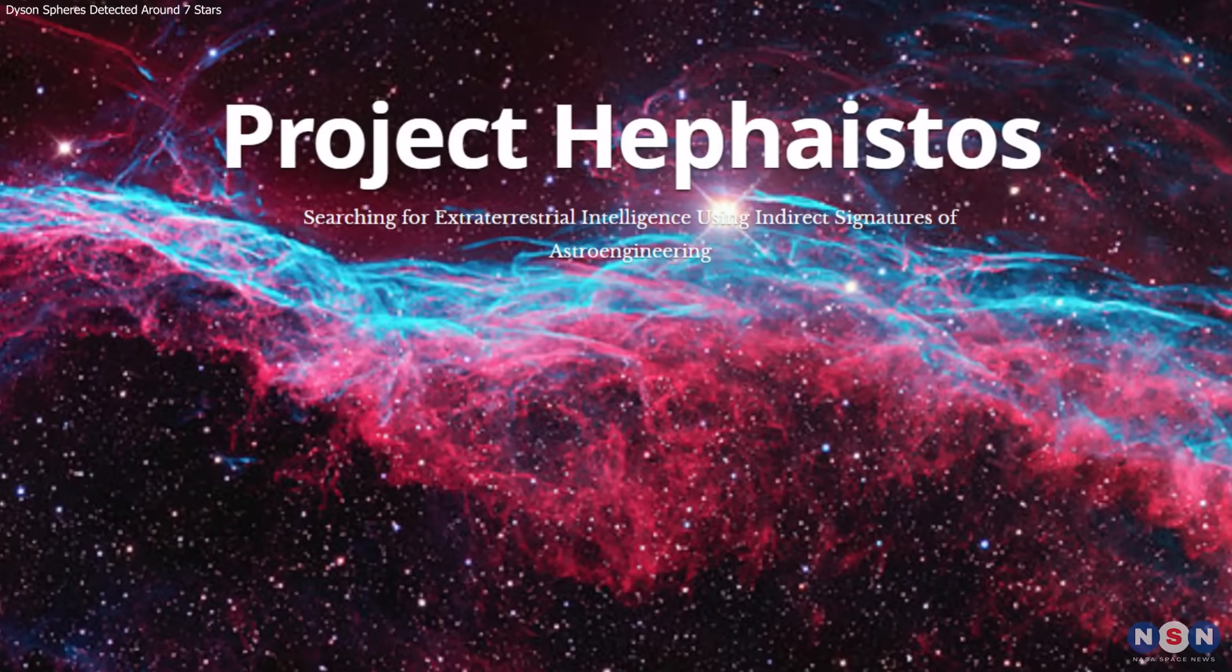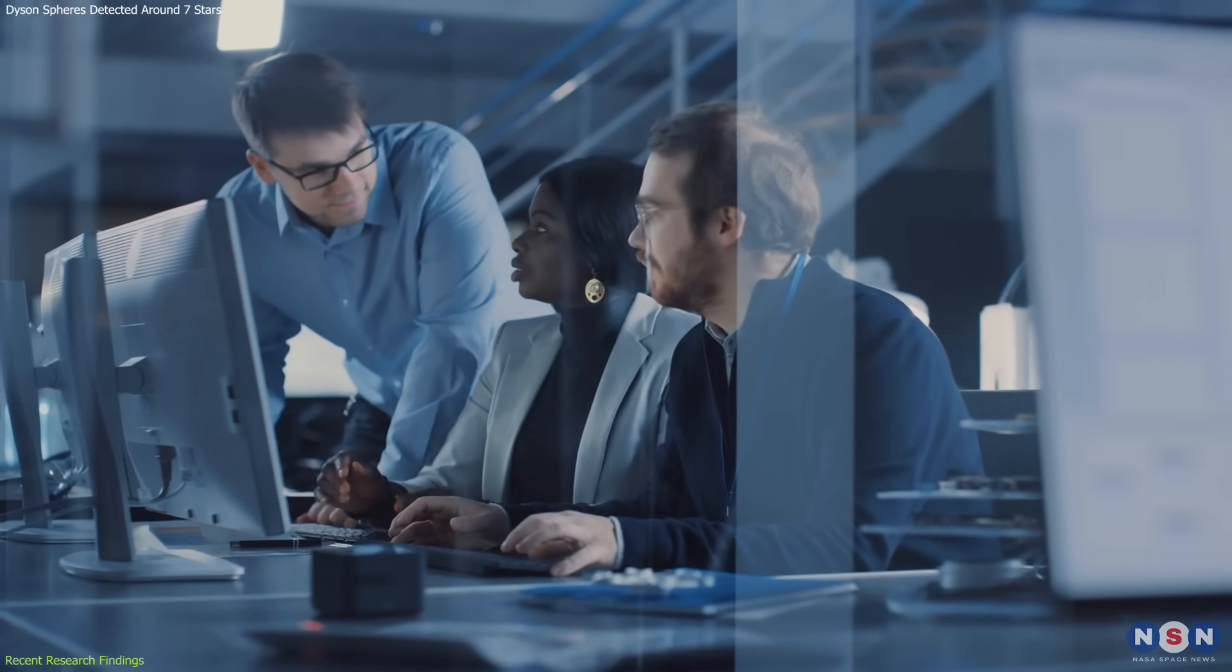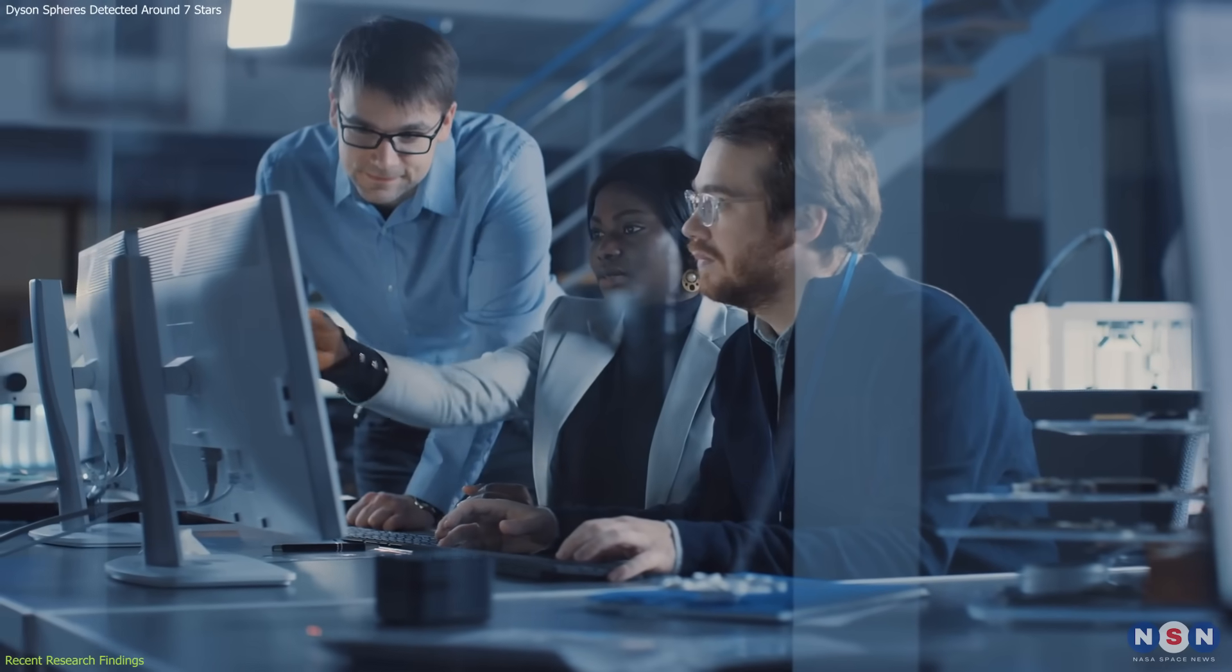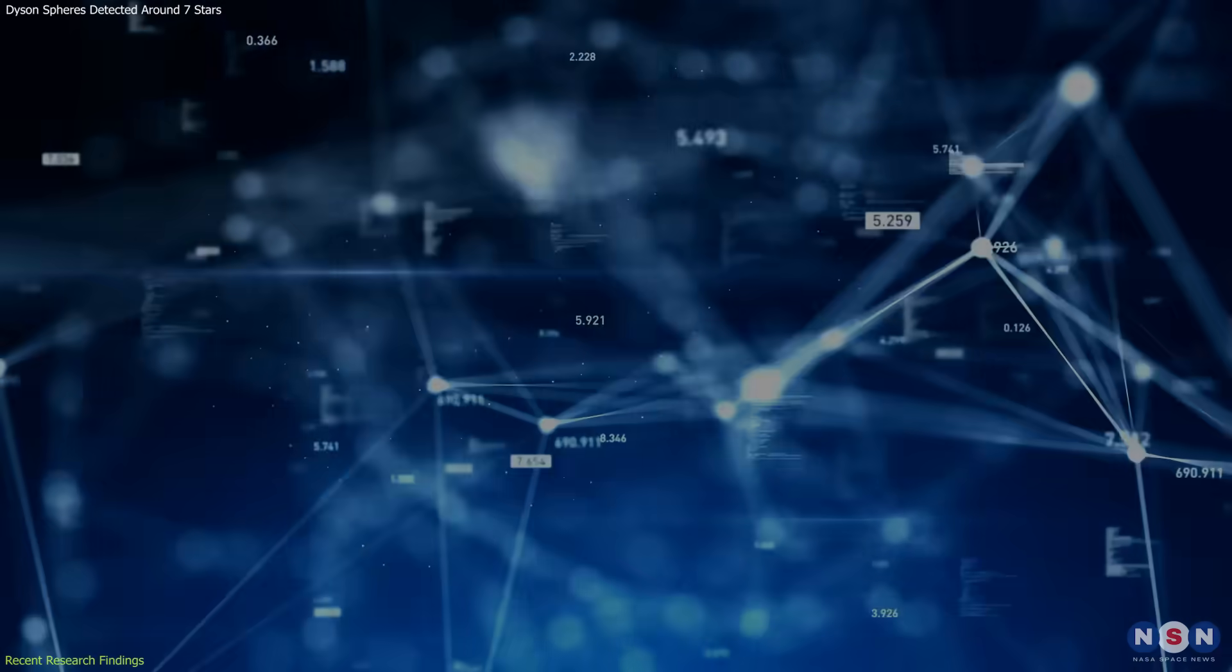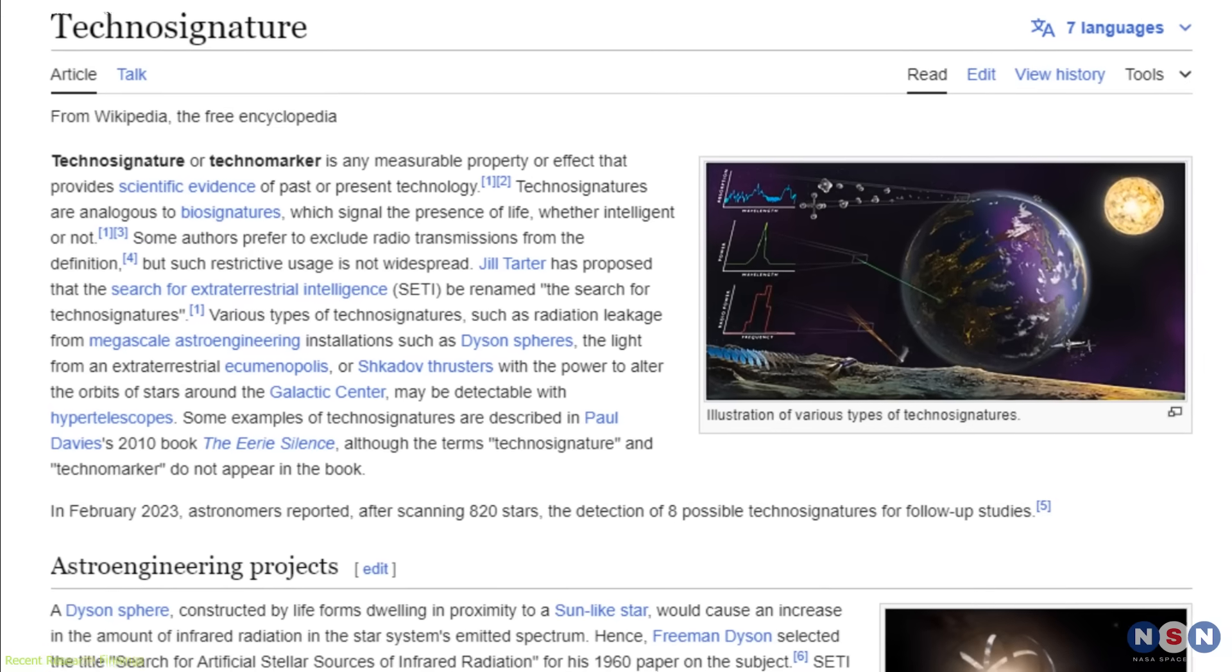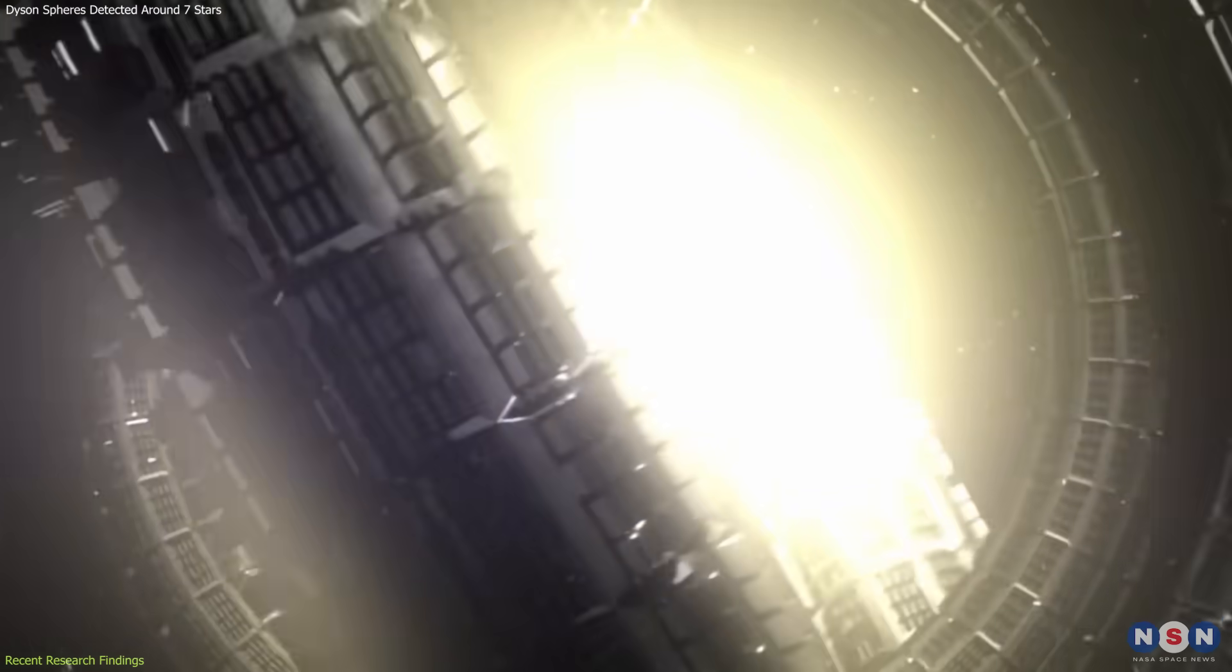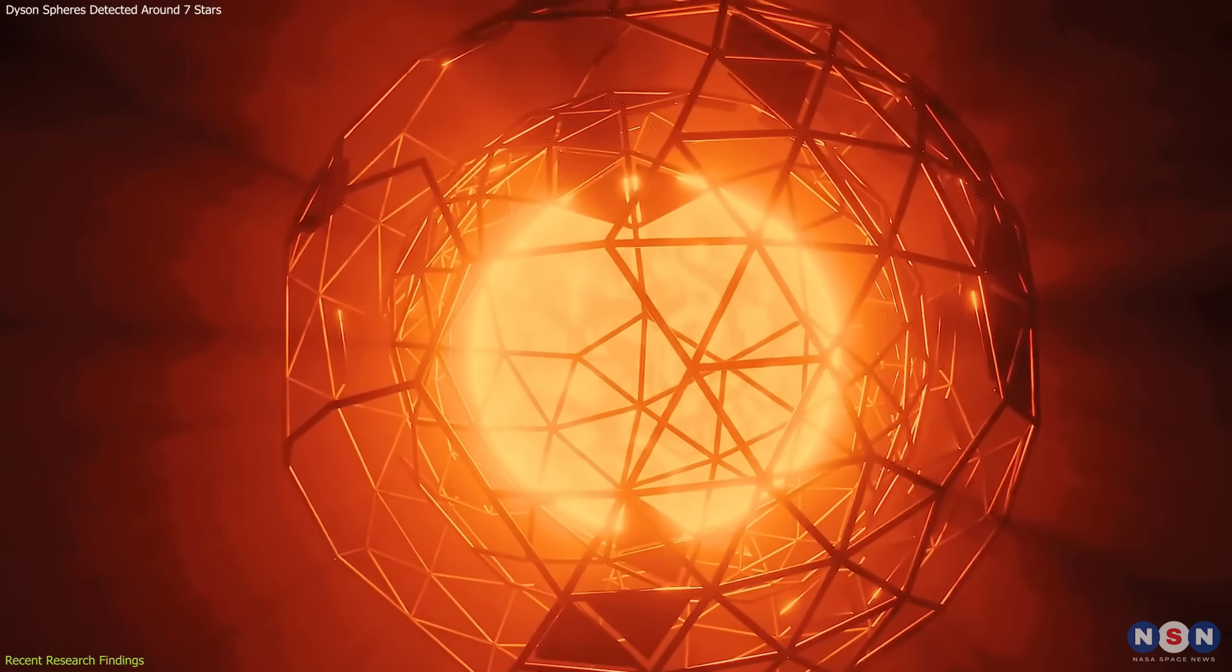A new project, known as Project Hephaistos, brought together a team of researchers from Sweden, India, the UK, and the USA. Their goal was to analyze vast amounts of astronomical data to uncover signs of advanced civilizations. They focused on technosignatures, which are indicators of technology used by intelligent beings. One such technosignature is unusual infrared emissions that might suggest the presence of a Dyson Sphere.